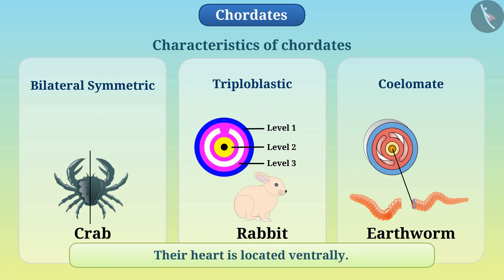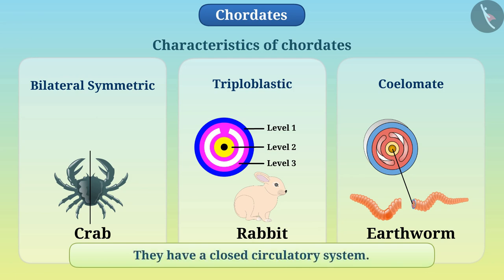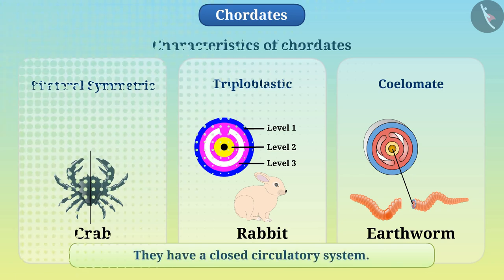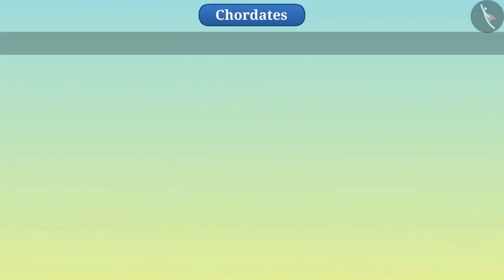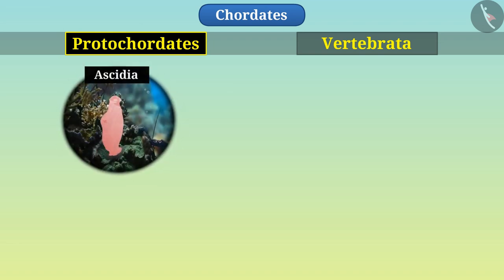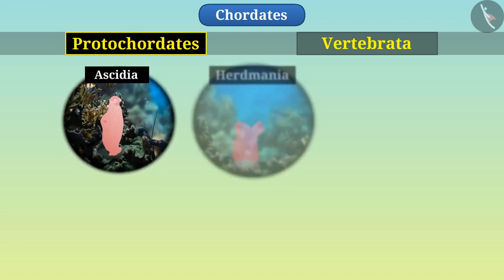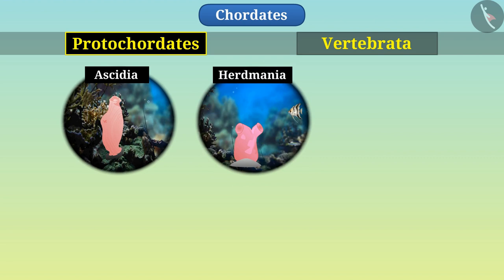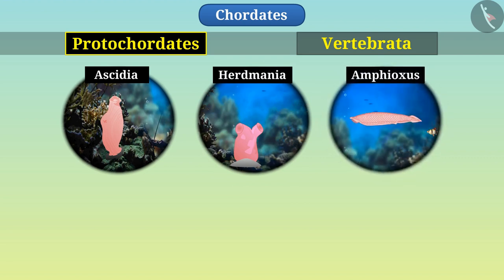Their heart is located ventrally. They have a closed circulatory system. The chordates can be divided into protochordates and vertebrata. Protochordates include Ascidia, Herdmania, Amphioxus, etc.